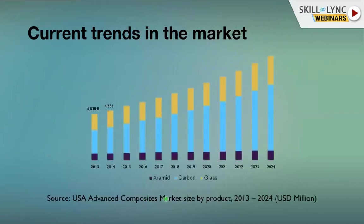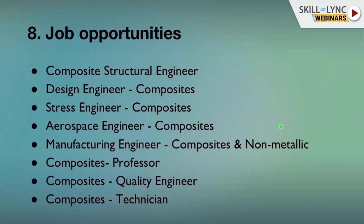Looking at the USA composite market: in 2013 it was about $4,000 million USD, but now it has reached nearly $8,000 million dollars — doubling in about 10 years. This growth indicates strong potential and job opportunities in the composites domain.